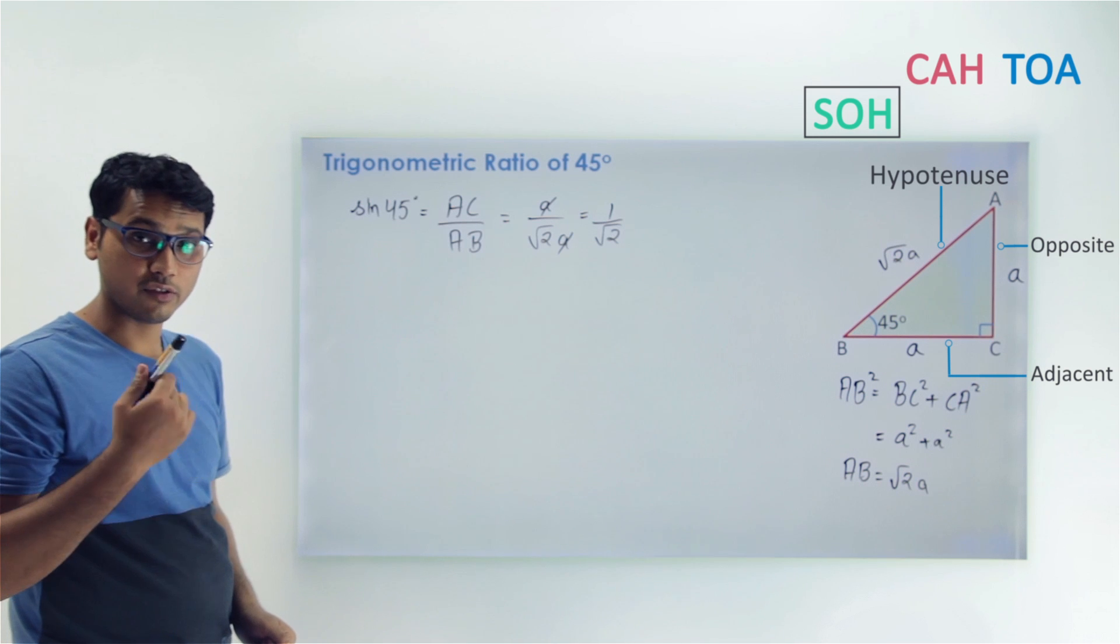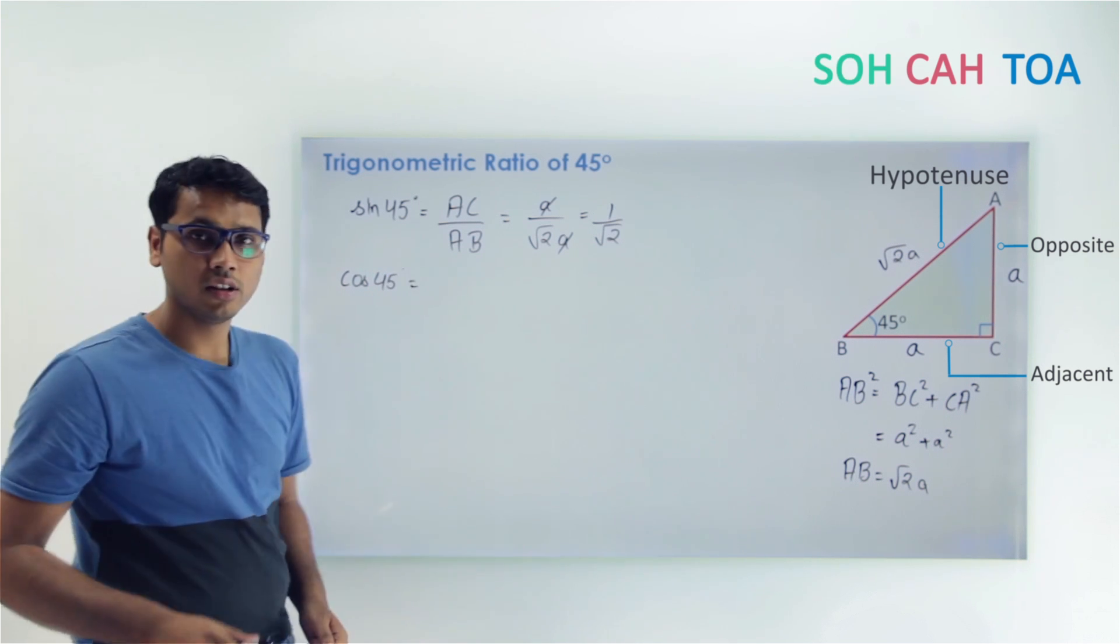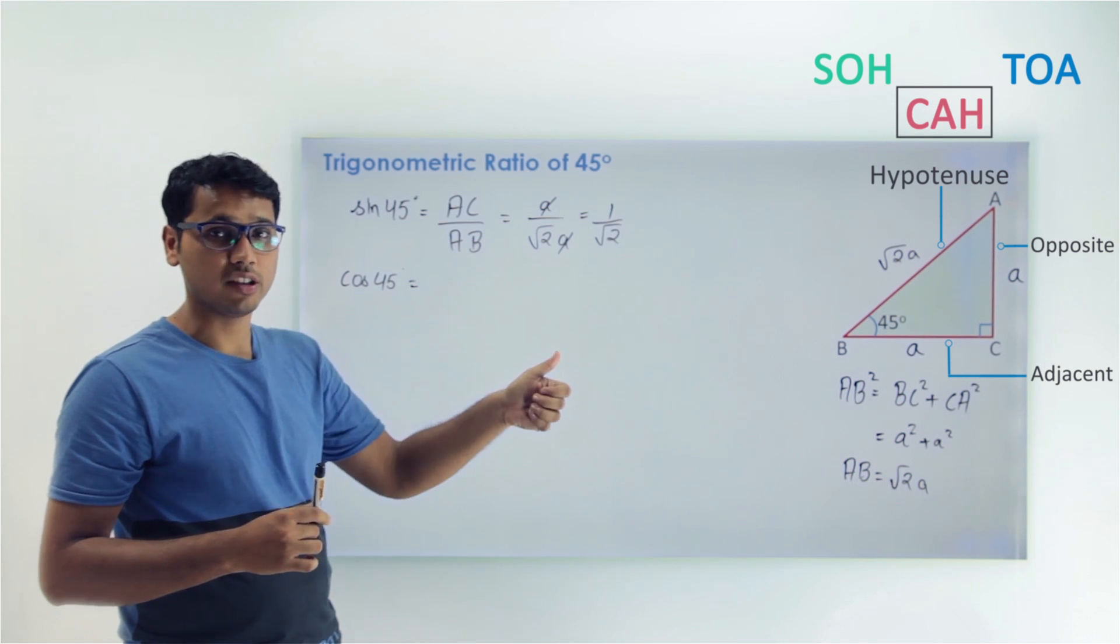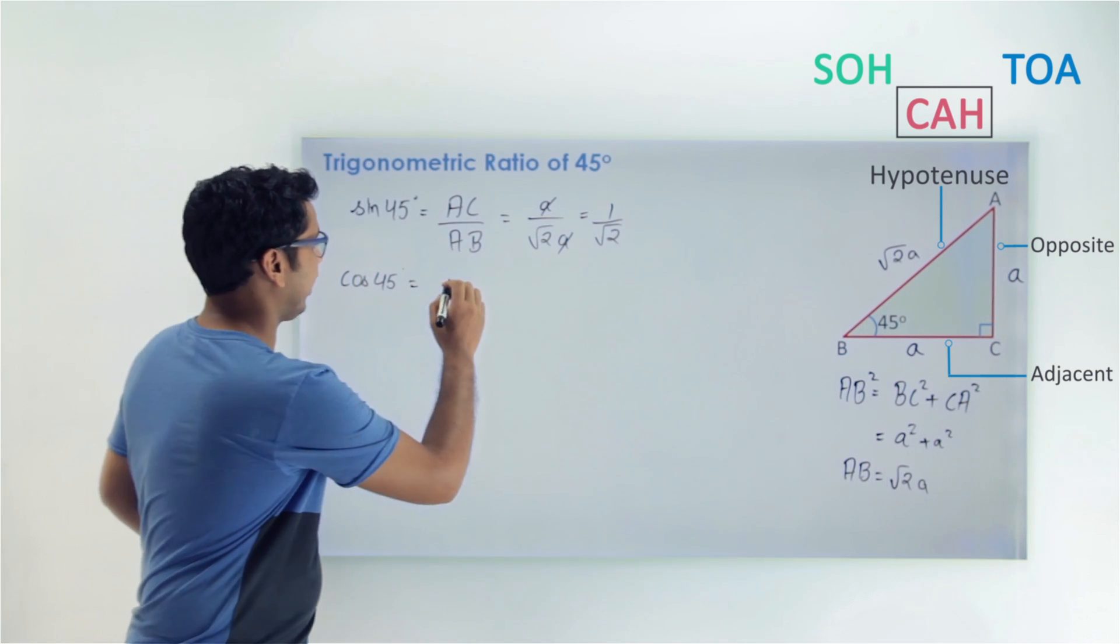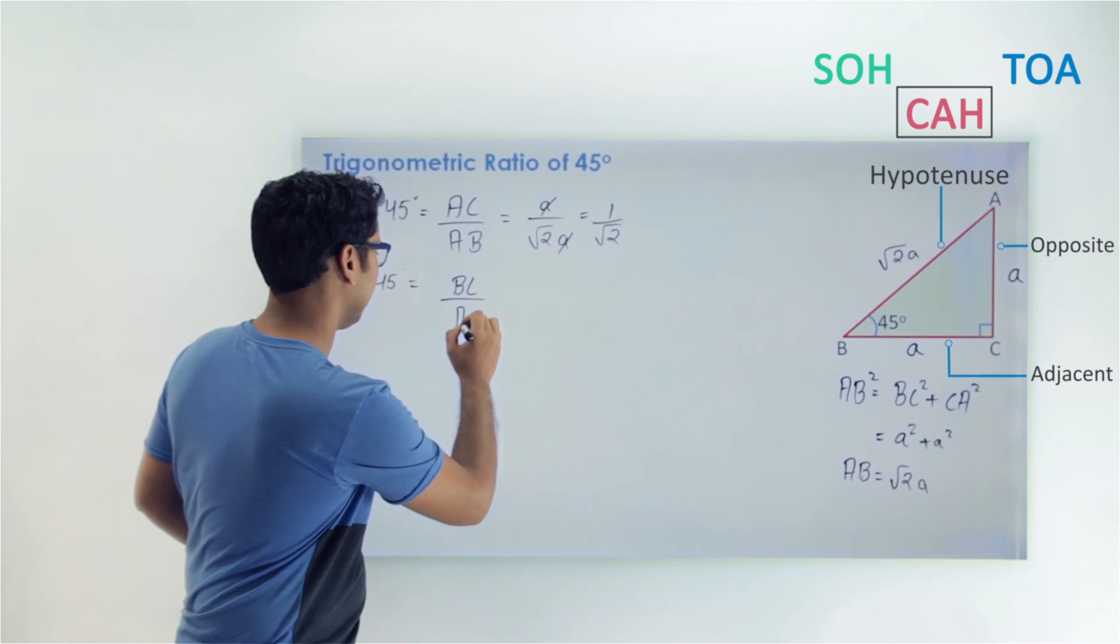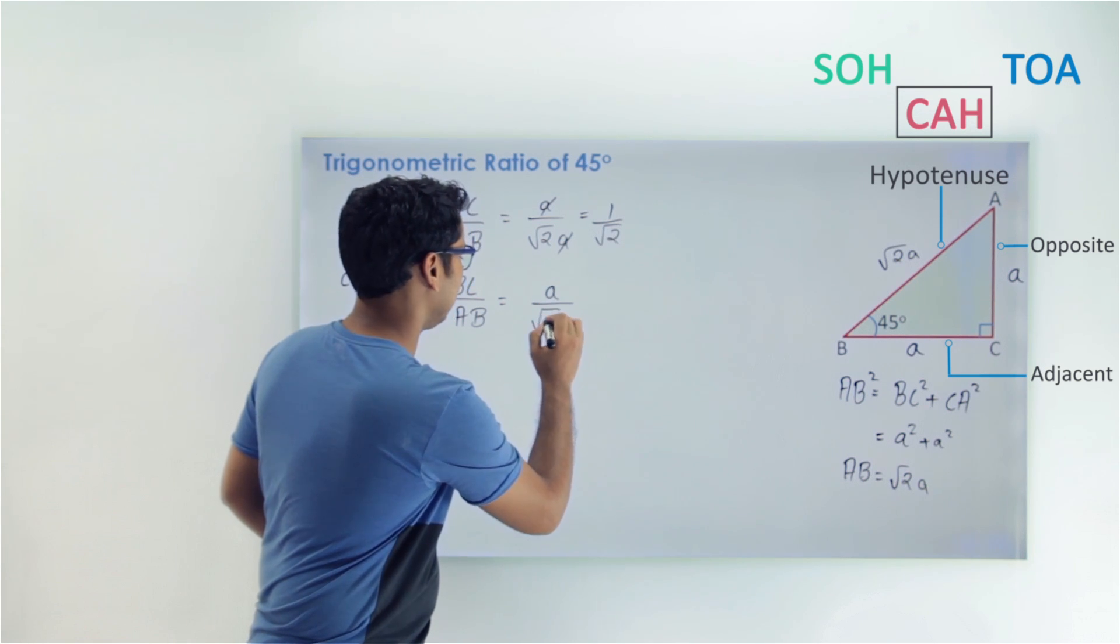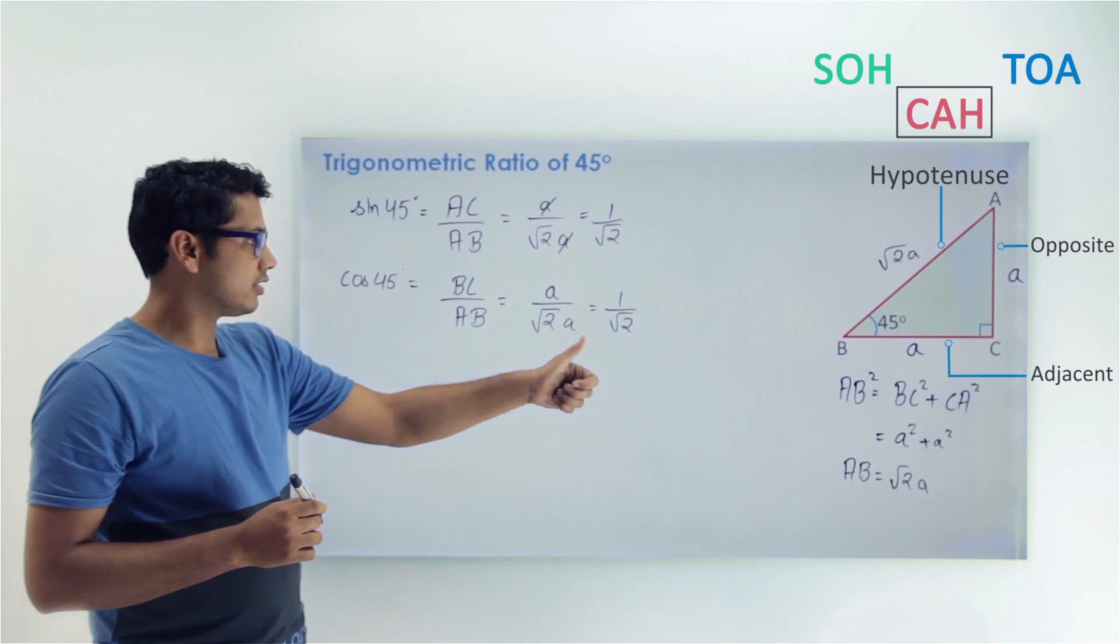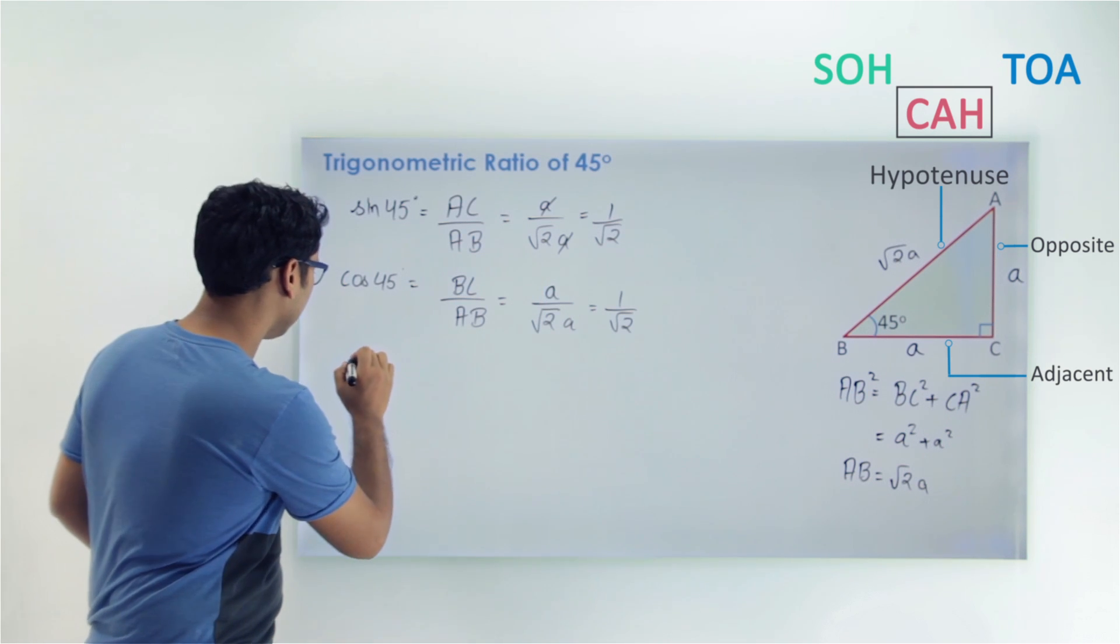Similarly, we can find the value of cos 45. Remember SOH CAH TOA? Cos 45 means cos is adjacent upon hypotenuse. Adjacent here is BC, and hypotenuse is AB. So cos 45 will be BC upon AB. Now put the values: BC is a and AB is √2a. So again we will get 1 by √2. This also matches with the table.